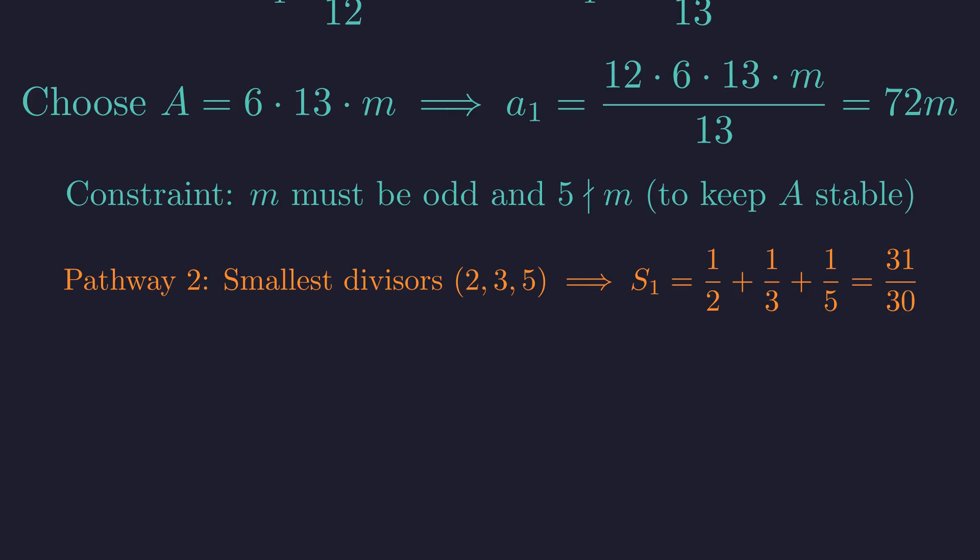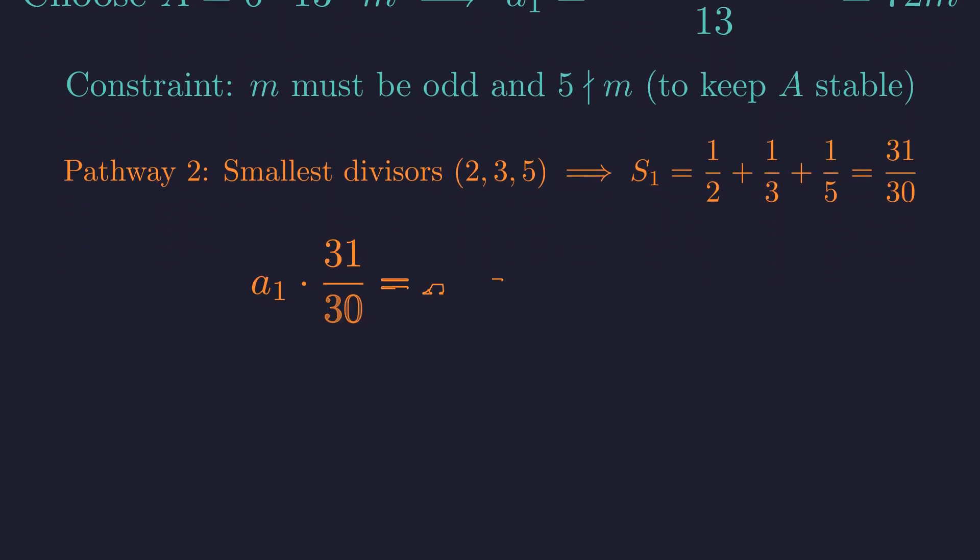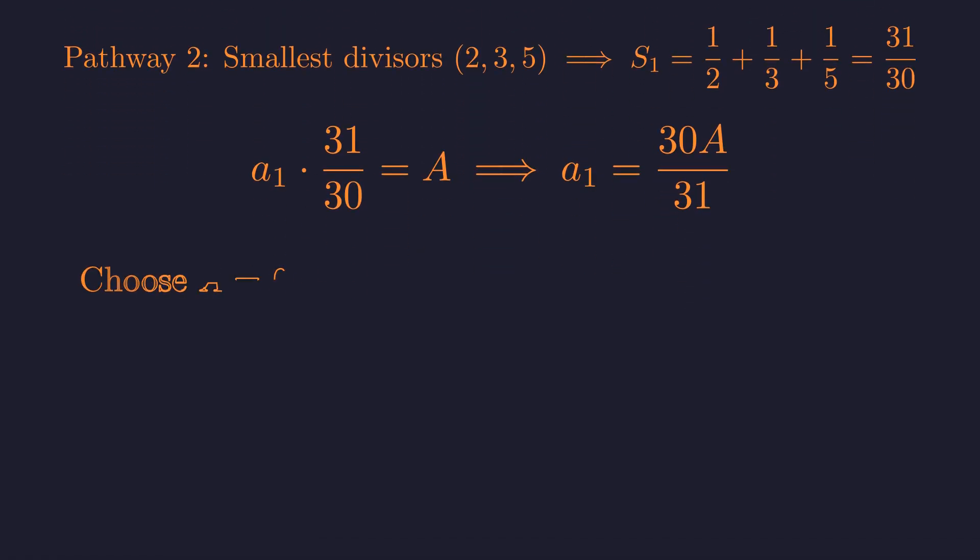Second, assume the smallest divisors of A1 are 2, 3, and 5. Then S1 equals 31/30. Setting A1 times this factor equal to a stable A gives A1 equals 30A/31. This implies A must be a multiple of 31. So we let A be 6 times 31 times m. Substituting this gives A1 equals 180m.